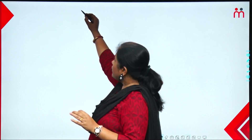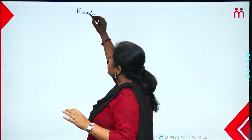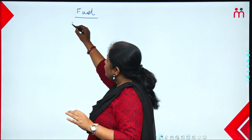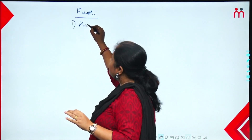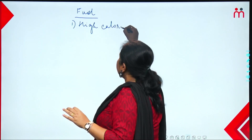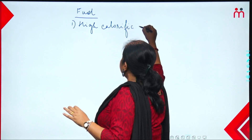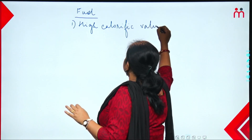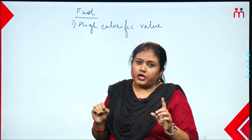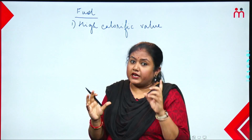First characteristic: fuel must have a high calorific value. High calorific value means it must supply a large amount of energy. It must be able to produce a large amount of energy — that is the most important first characteristic of a good fuel.